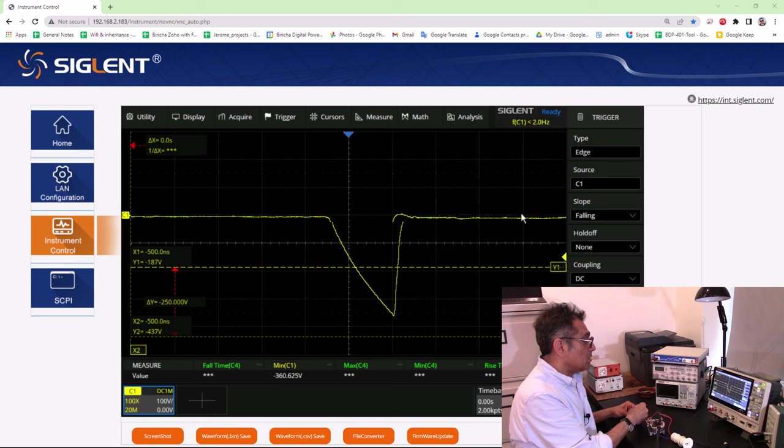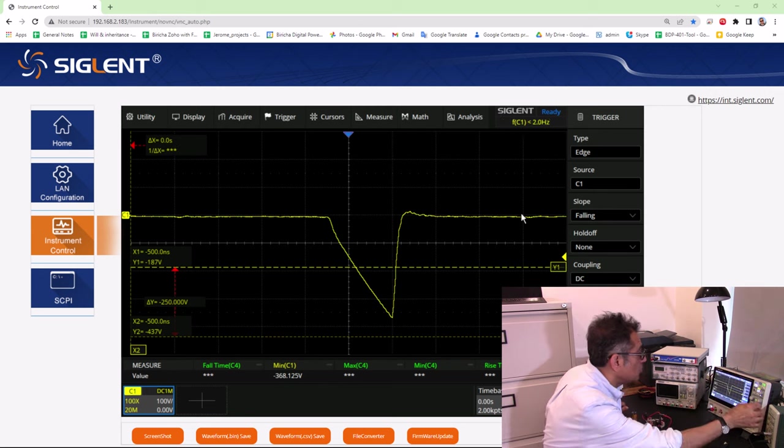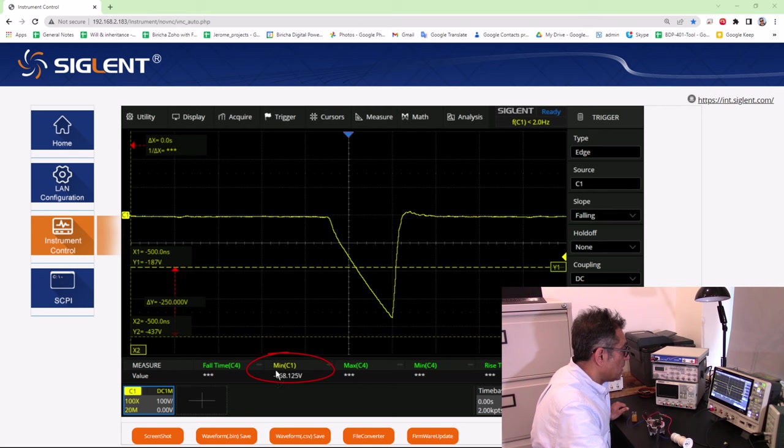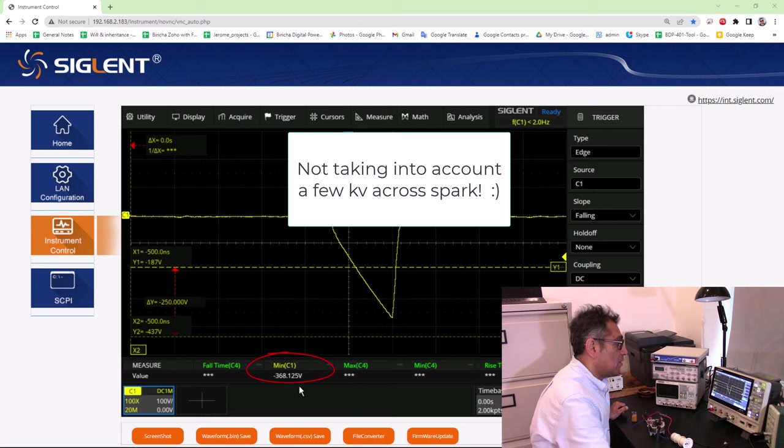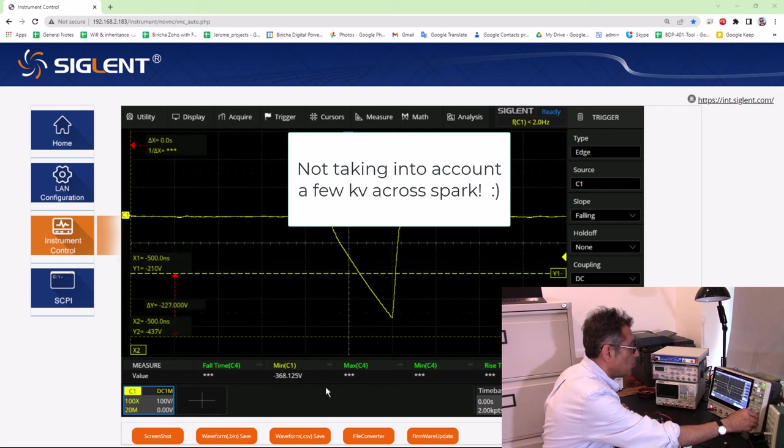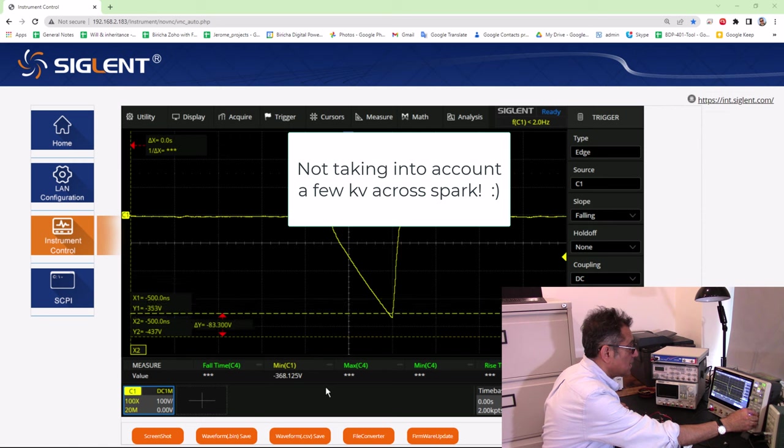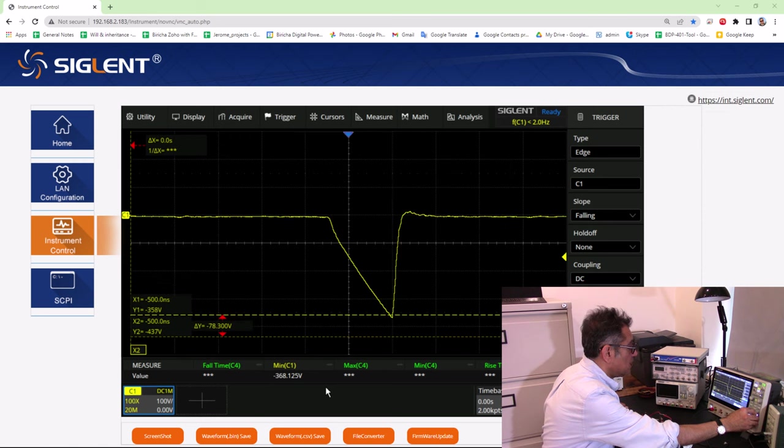Now if I now use the cursors actually you can see right here that the minimum is minus 368 volts so this point here is around minus 368 volts.